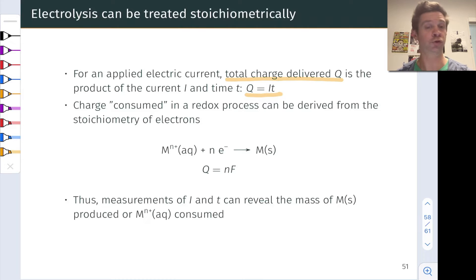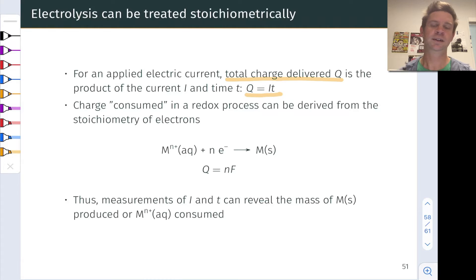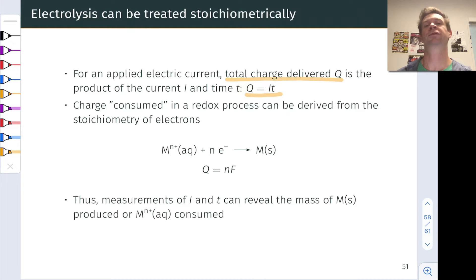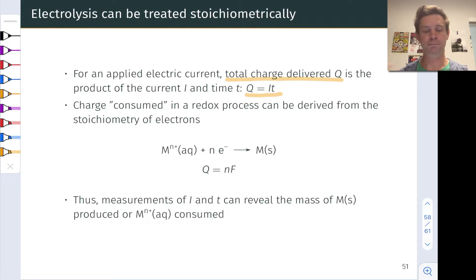Q, the charge, equals I, the current, times the time t. The units of Q are coulombs. The units of current are typically amperes, which is one coulomb per second. And the units of time in seconds make the units work out in this equation.